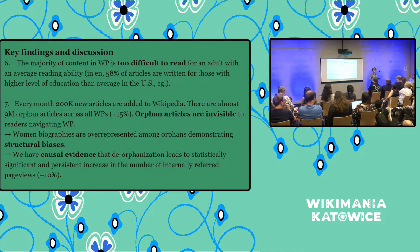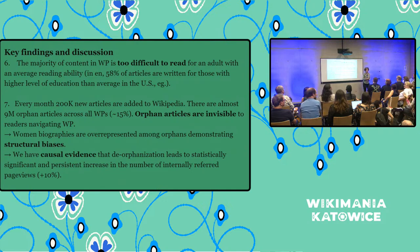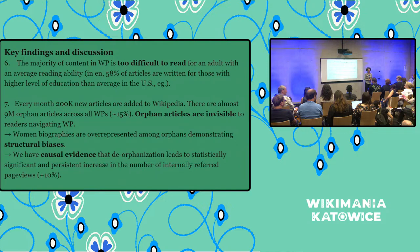I'm really interested in the readability results, especially because that captures an aspect of article quality that is actually not part of the article quality model. I was wondering if you knew anything about how the BERT readability correlates with the quality models and whether we could improve our quality models by adding a readability component.